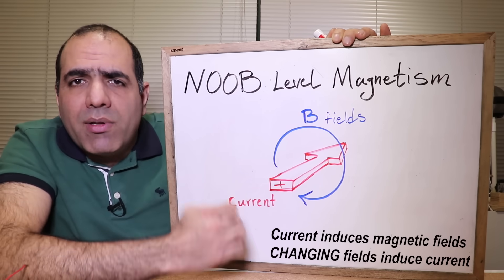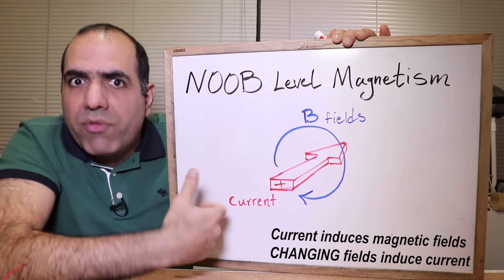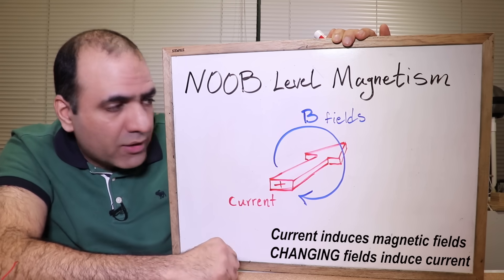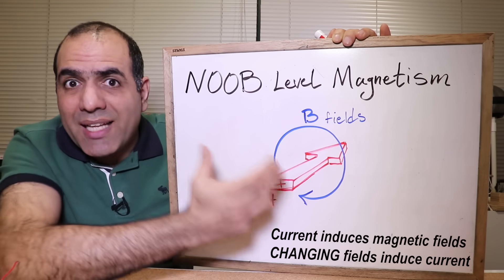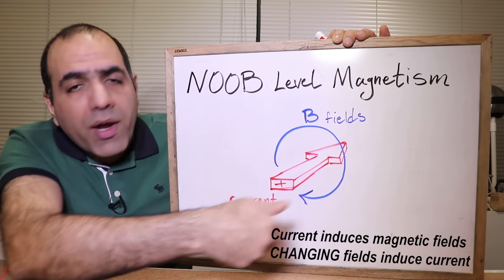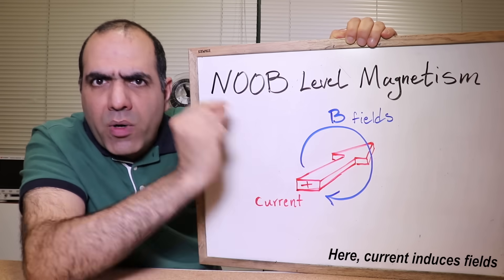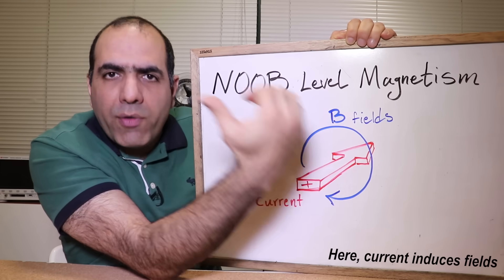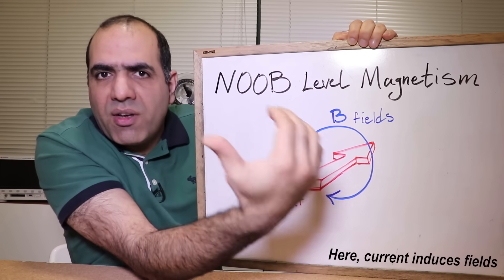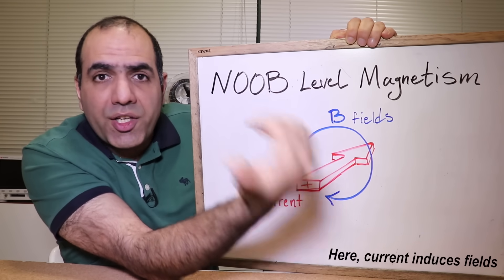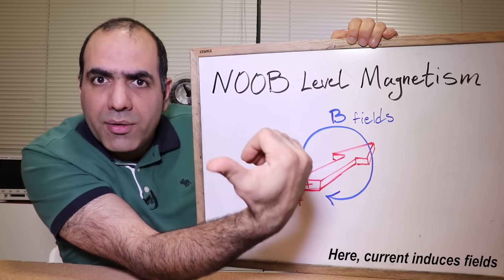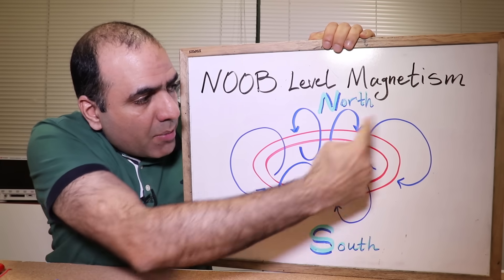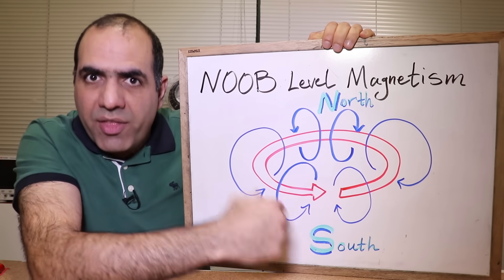Magnetism is quite simple at noob level, which we strive for here. When you have charges moving in a direction, you have current and magnetic fields wrap themselves around that path like this, going to infinity. This follows one of the right-hand rules where the thumb shows the direction of current, which is the flow of positive charges or reverse of electron flow, and other fingers show the direction of fields wrapping around the wire.